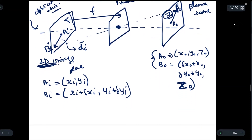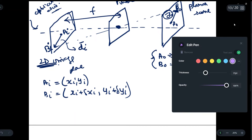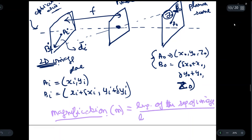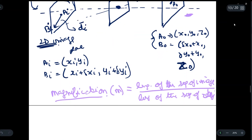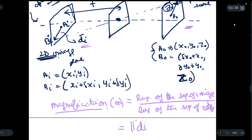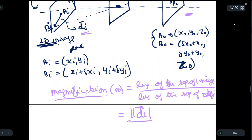Now we will write the formula for magnification — this is the most important part. Magnification, denoted m, is given by the length of the image segment divided by the length of the object segment, that is m = d_i / d_o.